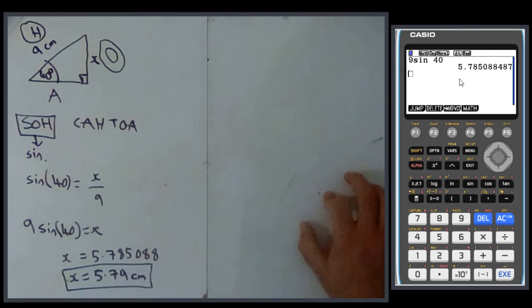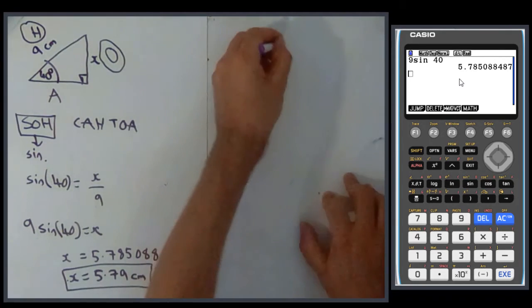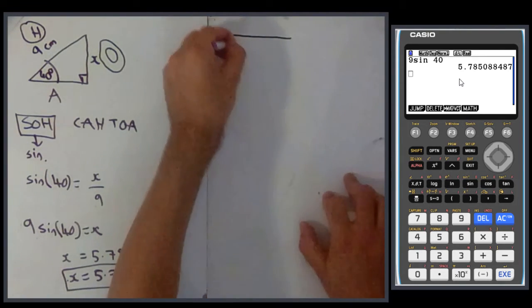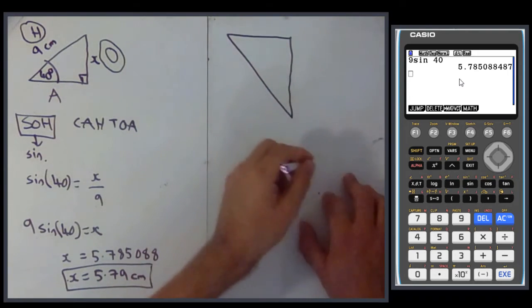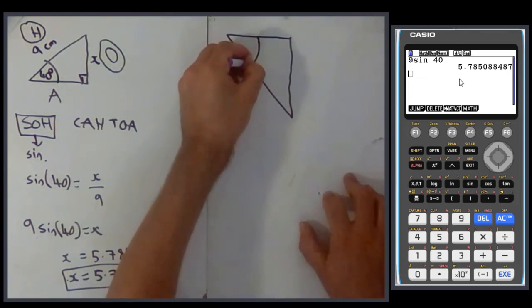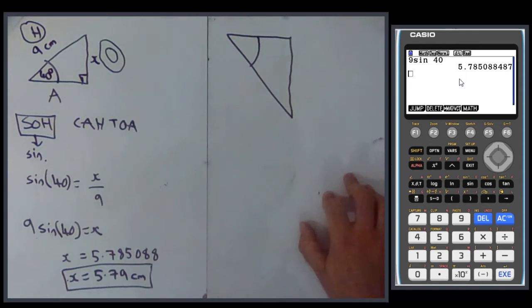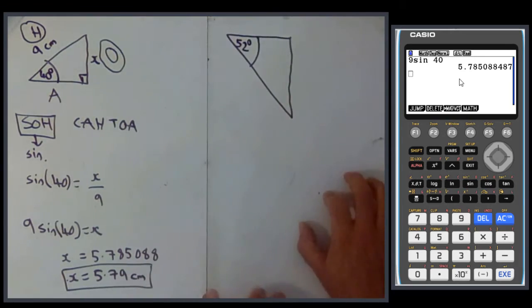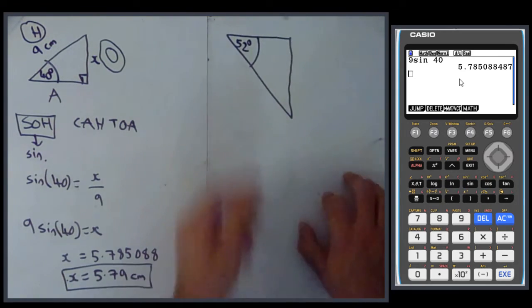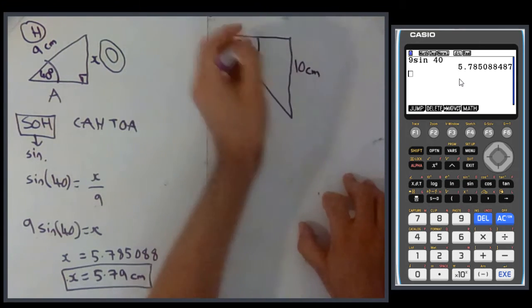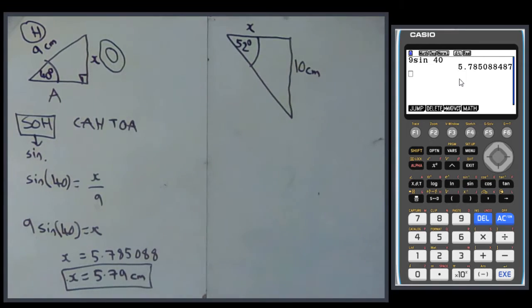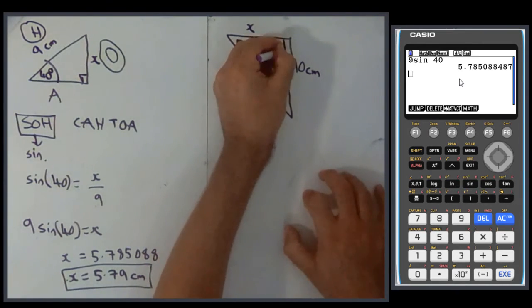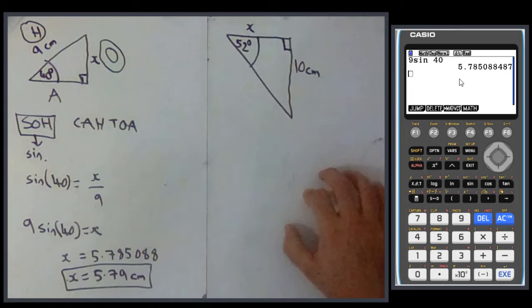Right, let's have a look at one where we might need to divide. So another triangle, and we'll have this angle, which looks like, let's call it 52 degrees. Okay, so we have this side, 10 centimeters, and this is what we want to find, x. Also we have a right angle. It doesn't work if you don't have a right angle.